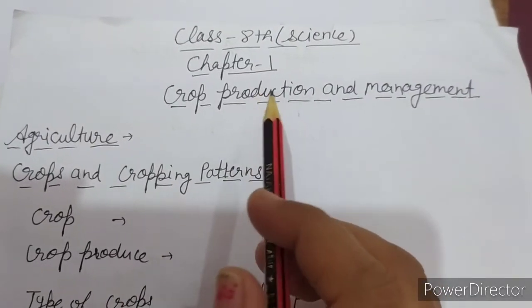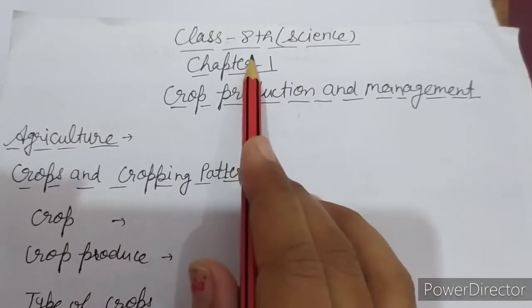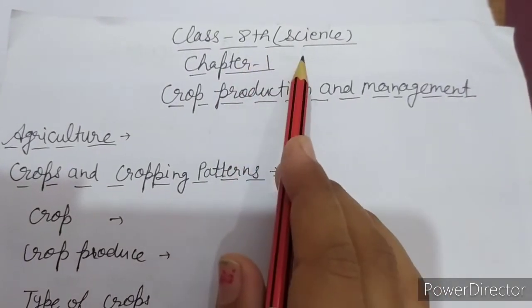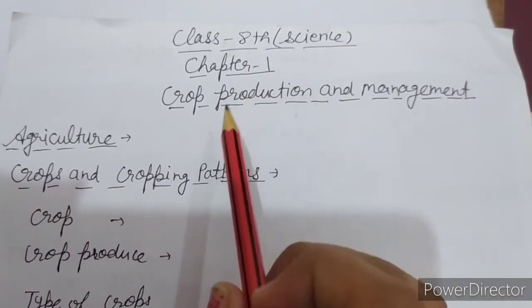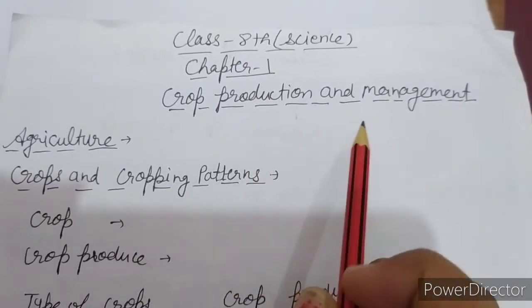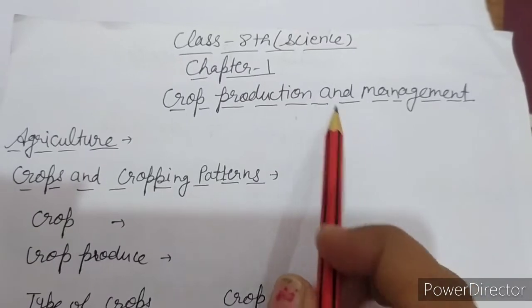This is your Science class — Class 8, Science, Chapter No. 1: Crop Production and Management.